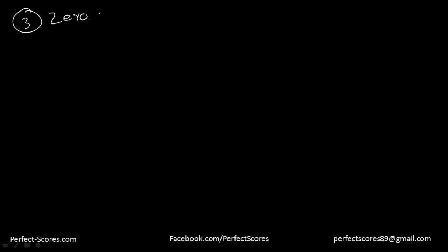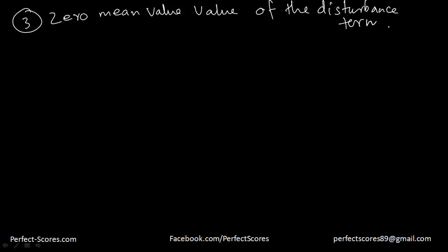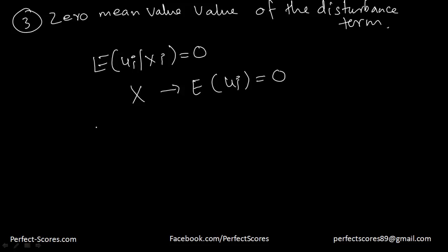The third assumption is the zero mean value of the disturbance term. Mathematically, the expected value of ui given xi is supposed to be zero. If x is non-stochastic, then the expected value of ui is zero. In layman's terms, the error terms when added up together will always sum to zero — the deviation on the negative side will always equal the deviation on the positive side.